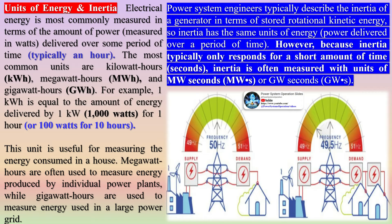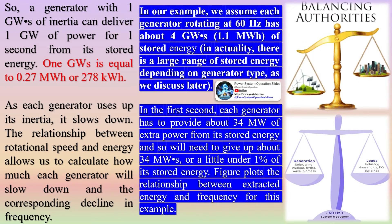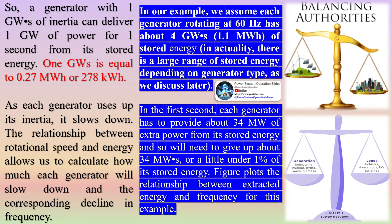The frequency as a function of time shows that generator inertia provides about two seconds for the system to respond before frequency falls below 59.5 Hz — assuming UFLS occurs at 59.5 Hz, this means the system has about two seconds to take corrective action. Many power plants are in the range of 100 to 1,000 MW. A typical small 100 MW generator has about 0.4 GWs of stored energy, equal to the kinetic energy of about 150 midsize sedans traveling at 60 mph, or enough to power an average household for about four days.